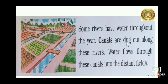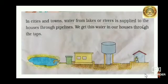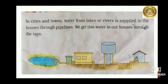Some rivers have water throughout the year. Canals are dug out along these rivers. Water flows through these canals into distant fields. In cities and towns, water from lakes or rivers is supplied to houses through pipelines. We get this water in our houses through the taps.